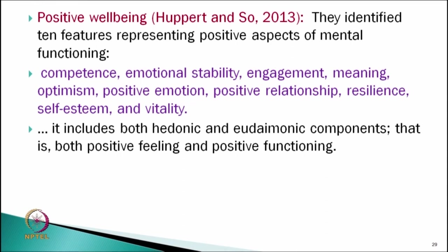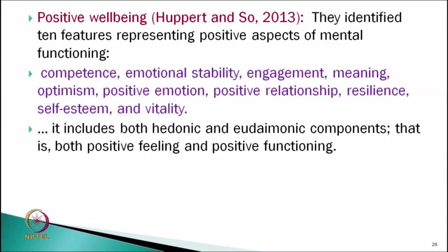Another model by Hooper and associates in 2013 is a mixture of previous models with some new elements. They identified positive aspects of mental functioning as: competence, emotional stability, engagement, meaning, optimism, positive emotion, positive relationships, resilience, self-esteem, and vitality. Some of these were covered by other theories; however, resilience, optimism, and vitality are new additions. They claim this theory has both hedonic and eudaimonic components, proposing positive feeling and positive functioning aspects of well-being.